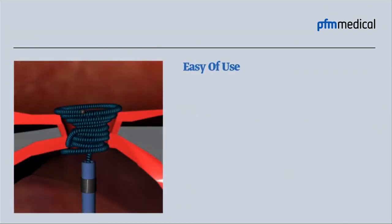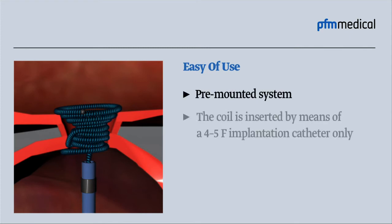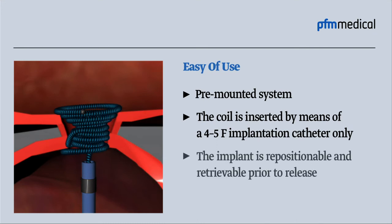Ease of use: pre-mounted system. The coil is inserted by means of a 4–5F implantation catheter only. The implant is repositionable and retrievable prior to release.